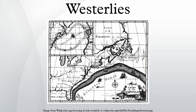Throughout the year, the westerlies vary in strength with the polar cyclone. As the cyclone reaches its maximum intensity in winter, the westerlies increase in strength. As the cyclone reaches its weakest intensity in summer, the westerlies weaken. An example of the impact of the westerlies is when dust plumes originating in the Gobi Desert combine with pollutants and spread large distances downwind, or eastward, into North America.